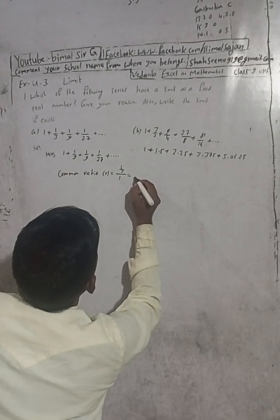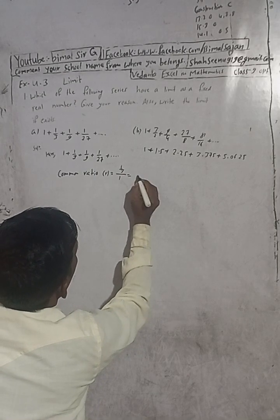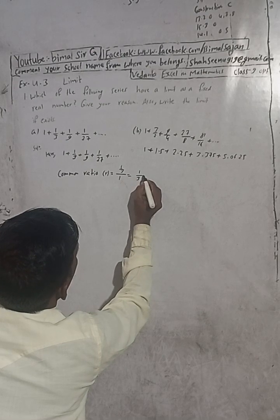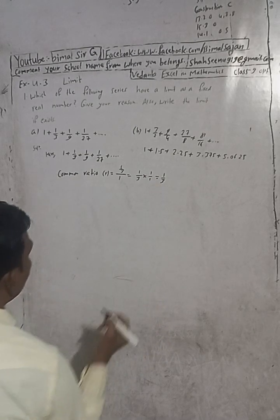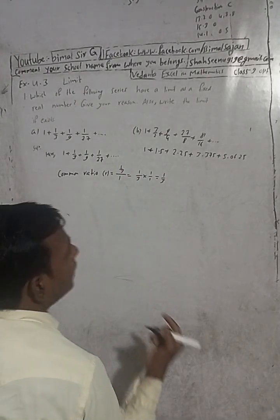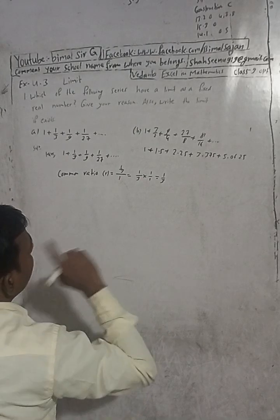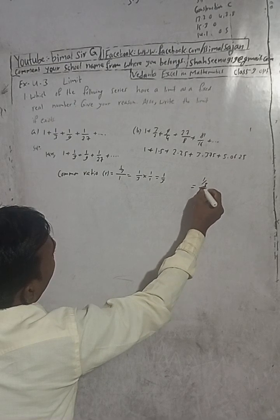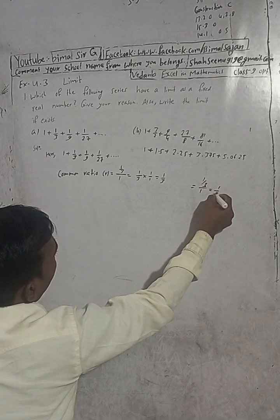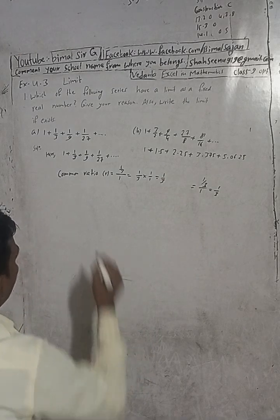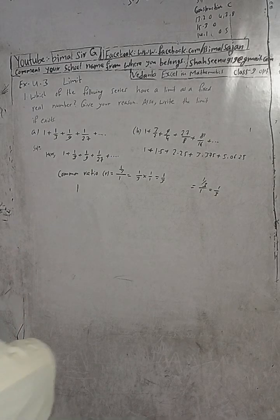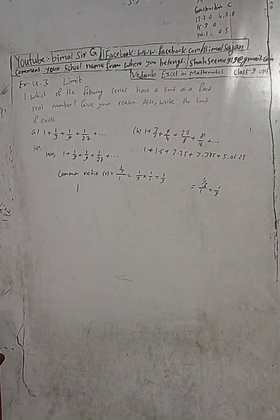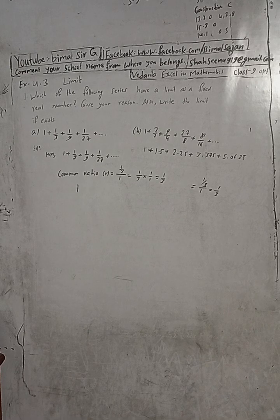The common ratio is 1 by 3 divided into 1 by 1, then 1 by 3 divided into 1 by 3, divided into 1 by 3 — which means the ratio is 1 by 3, to the power 5, to 3, which gives 1 by 3.